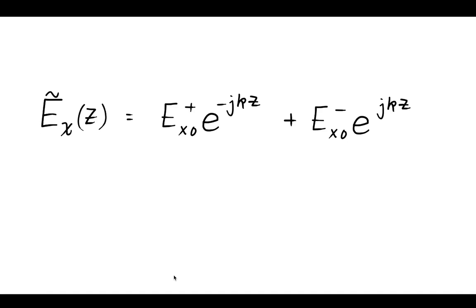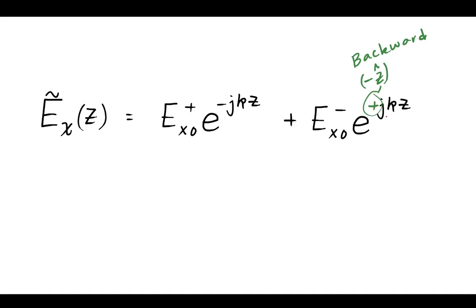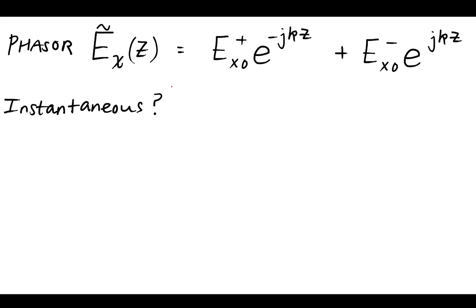This is the total solution form, and there are a couple of things to note. We see this minus sign, and from our previous study on waves, if we see this minus sign in front of z, that means it's a forward traveling wave — traveling in the plus z direction in time. And then likewise, on the other part, we see a positive jkz, and this is the backward traveling wave. The two leading constants are coefficients that come from knowledge of the boundary conditions. Solving that differential equation gives us a solution form where we don't yet know the constants, but we know what the solution form looks like.